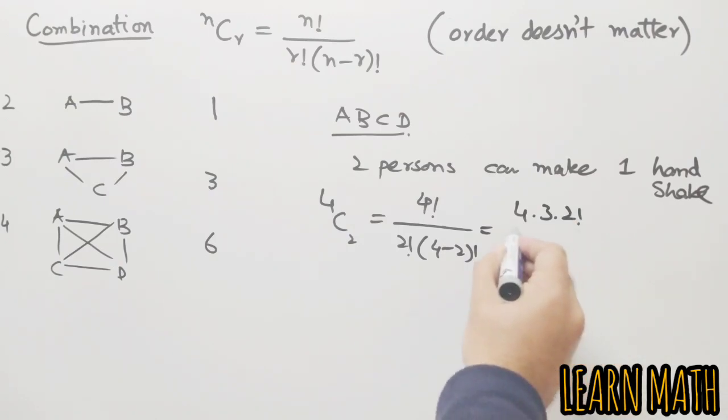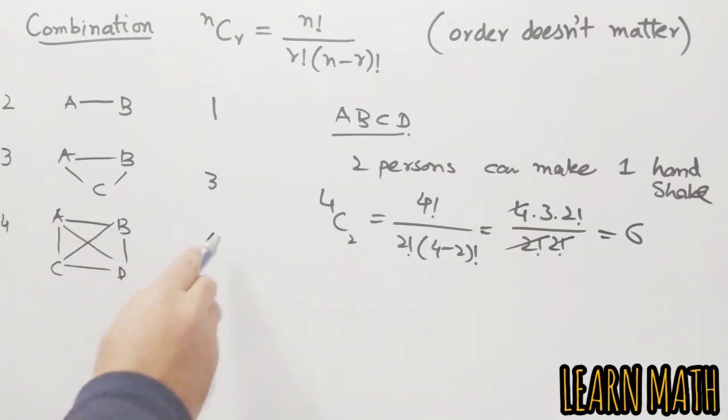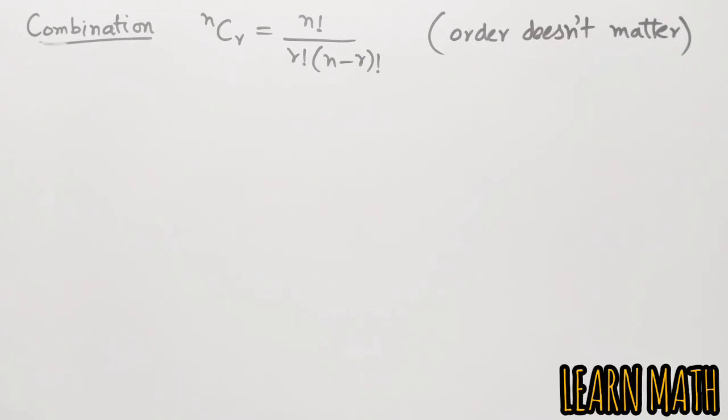Now we will simplify this. 4 factorial is 4 times 3 times 2 factorial divided by 2 factorial times 2 factorial. We will cancel 2 times 2 factorial with 4 and 3 to get six. So if n is four and r is two, 4C2 is equal to six. In this type of questions we have three things: number of persons, number of handshakes, and r which is always two.